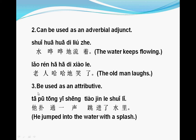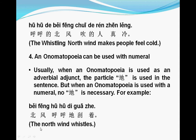The third thing we need to know is that xiāng shēng cí can be used as an attribute. For example: tā pū tōng yī shēng tiào jìn le shuǐ lǐ — pū tōng is used as an attribute here, meaning 'she jumped into the water with a splash.' Another example: hū hū de běi fēng chuī de rén zhēn lěng — hū hū de means whistling; běi fēng means north wind; chuī means blowing; zhēn means really; lěng means cold.